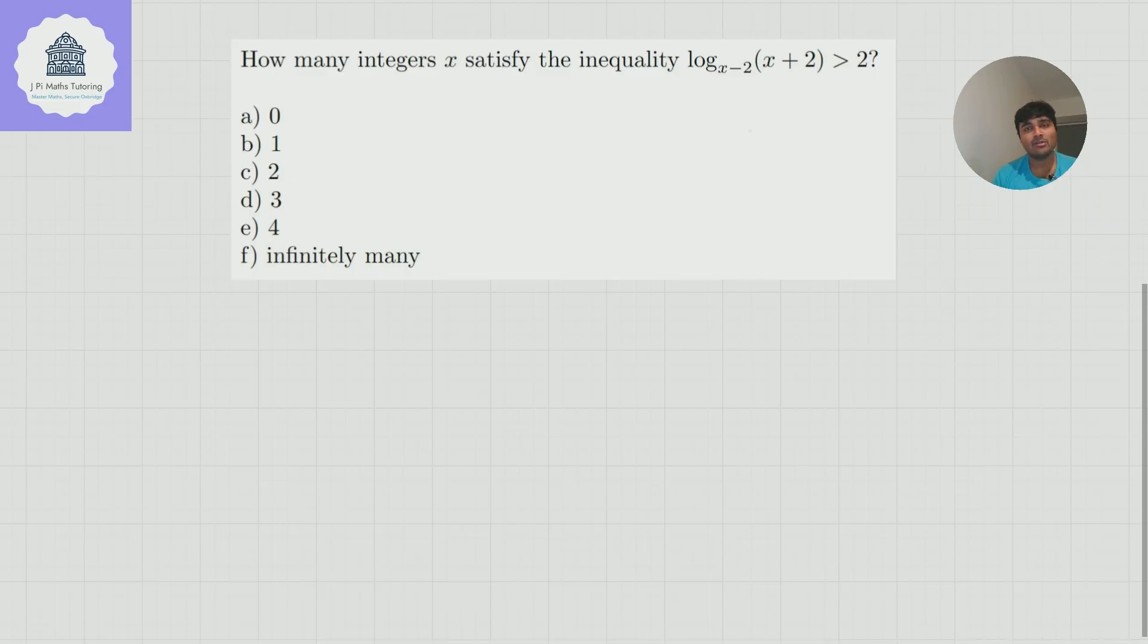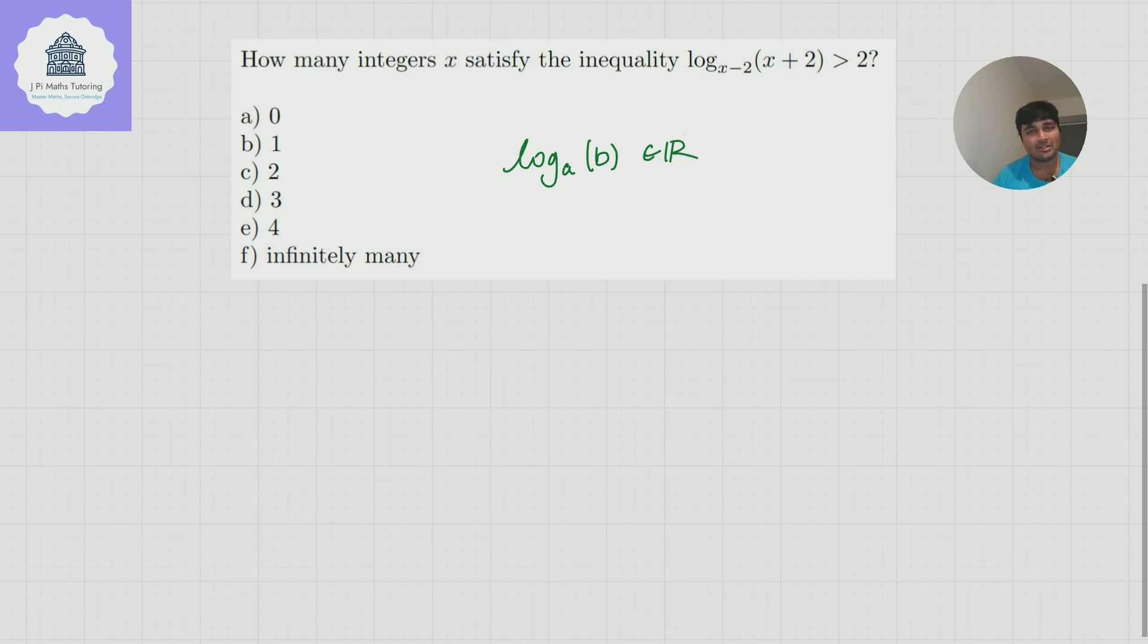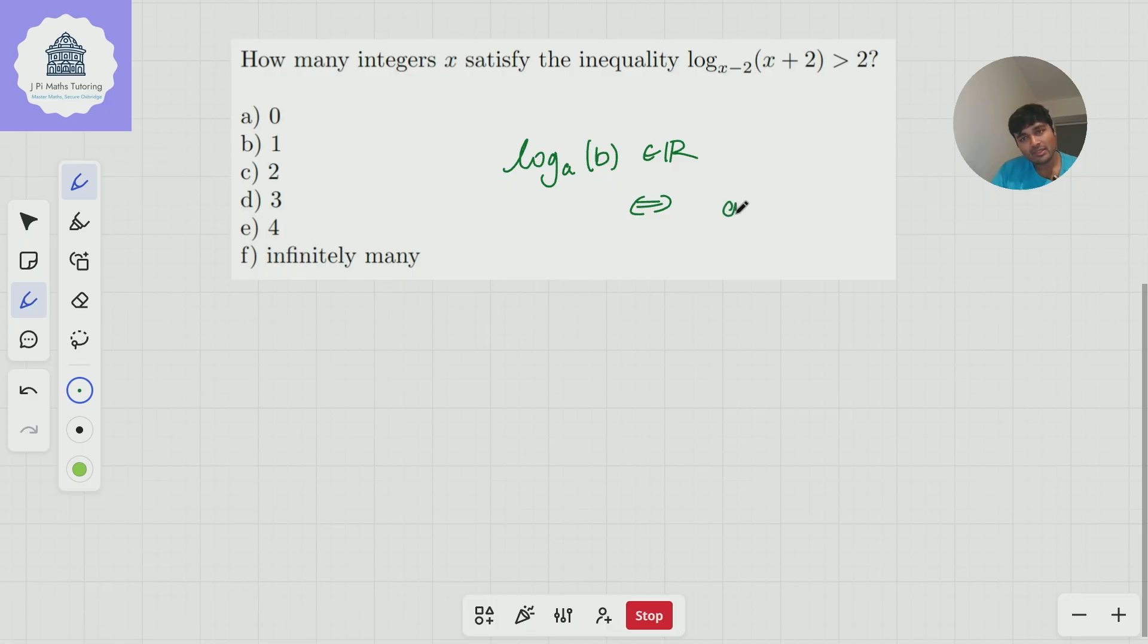Firstly, whenever we're dealing with logs, it's worth just making a note of when the logarithm exists. So remember, for log base a of b to be a real number, which for the TMUA and MAT and pre-Oxbridge, everything's going to be real. Base and argument are going to be real. This is a real number if and only if a is bigger than 0, a is not equal to 1, and b is bigger than 0. So the argument has to be bigger than 0, and the base has to be bigger than 0, but not equal to 1.